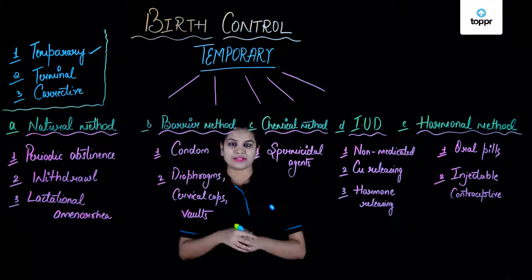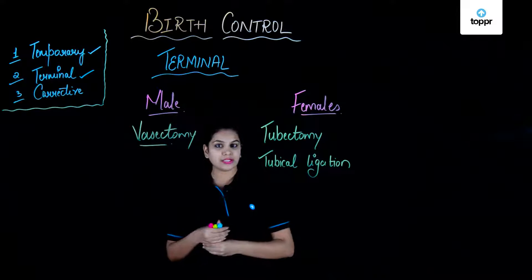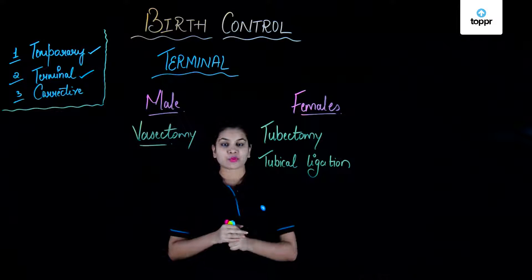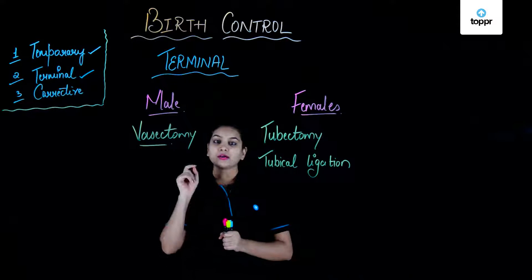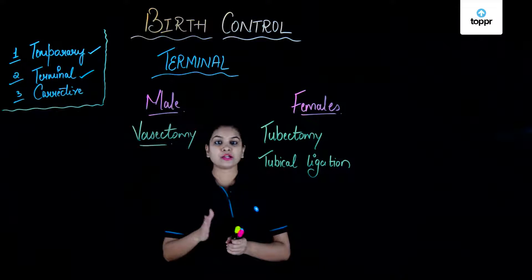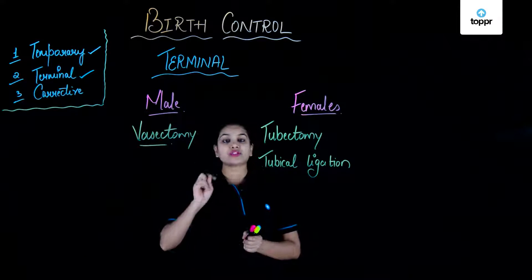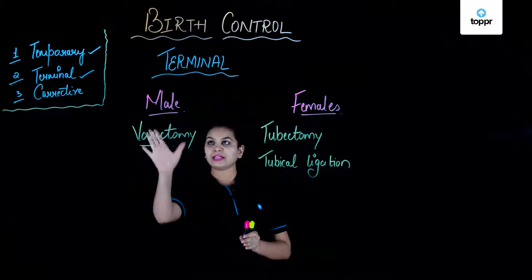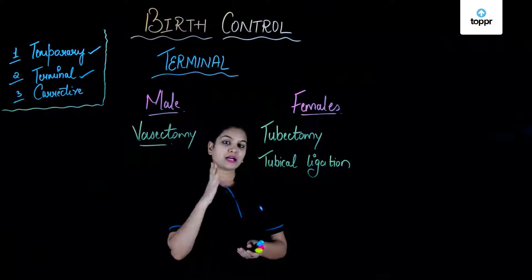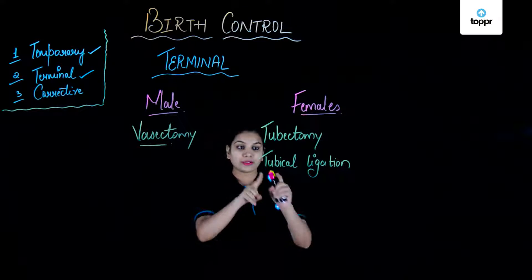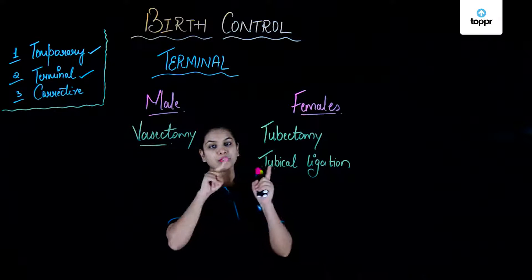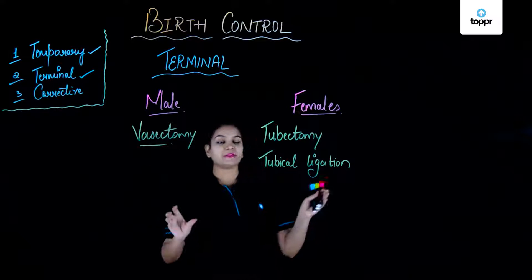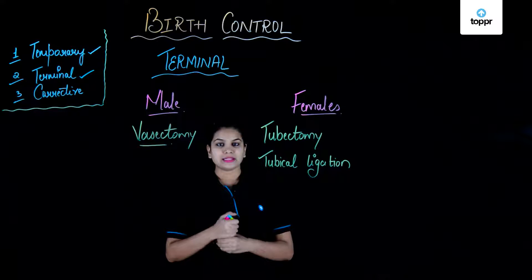Moving forward, the second method is the terminal method, also called surgery or sterilization, which can be done for both males and females. When done in males, it is termed vasectomy — the ligation or cutting of the vas deferens — which prevents the transport of gametes and thus conception. In females it is called tubectomy — the cutting or tubal ligation of the fallopian tubes — so the ova cannot reach the middle part of the fallopian tube, avoiding fertilization.